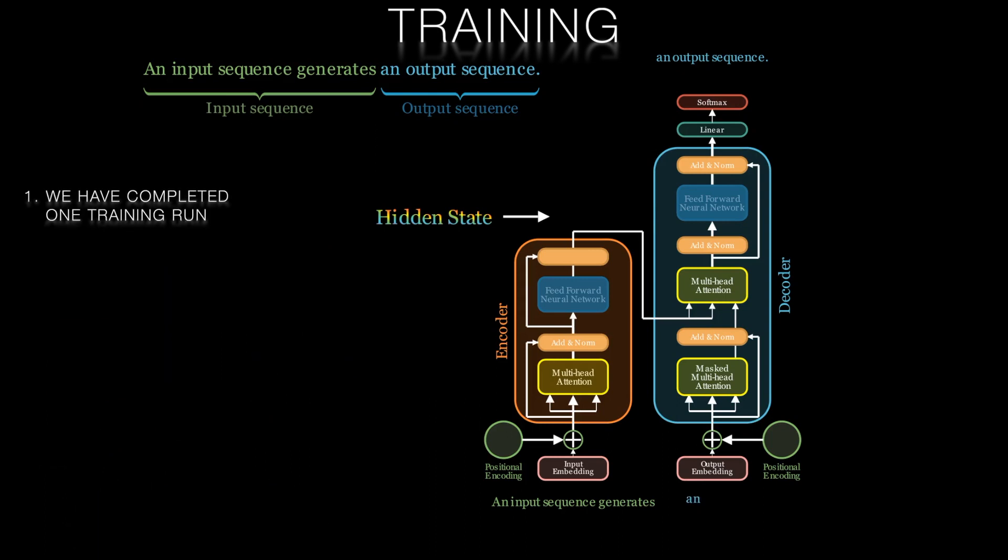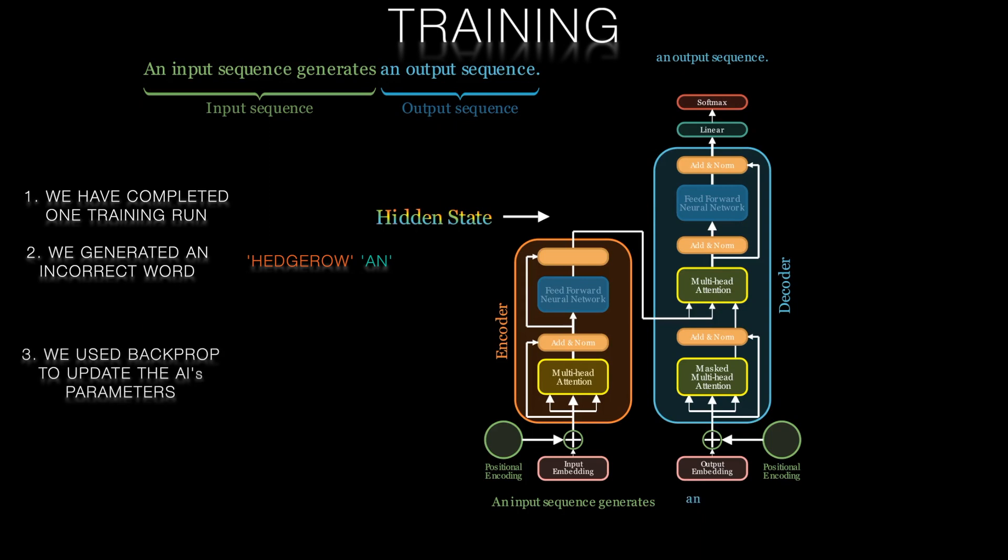So after this first prediction, let's take stock. We have an incorrectly predicted word 'hedgerow' rather than 'an,' and we've used this incorrect prediction to update our transformer weights a little.